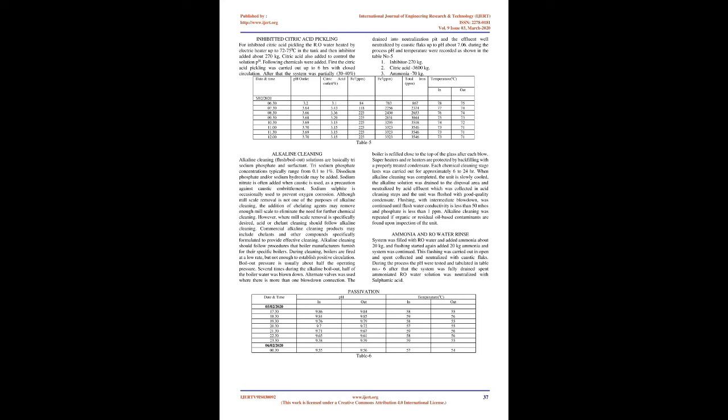Inhibited citric acid pickling: RO water was heated by electric heater up to 72–75°C in the tank, then inhibitor was added — approximately 270 kg. Citric acid was also added to control the solution pH. The citric acid pickling was carried out for up to 6 hours with closed circulation. After that, the system was partially (30–40%) drained into a neutralization pit and the effluent was neutralized by caustic flux up to pH approximately 7.0. Chemicals used: inhibitor 270 kg, citric acid 3,600 kg, ammonia 70 kg.